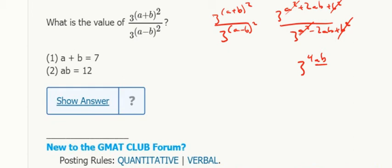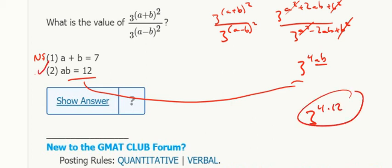So 1 tells me a plus b, but that's not ab, so that's not sufficient. And 2 tells me ab, that's what I want, 3 to the 4 times 12. Either way, I can figure out the value from that, so that's sufficient, 2 only, B.